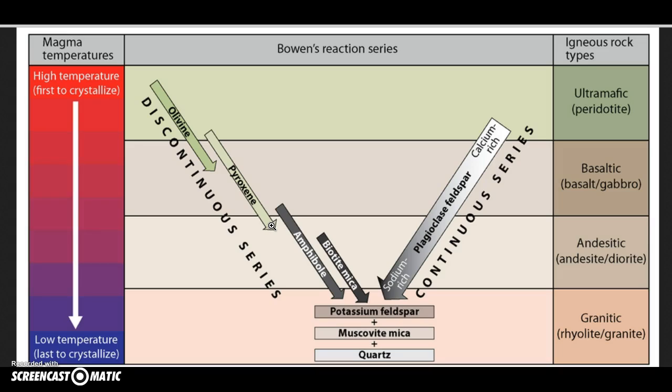So that's just a little bit of how we can go through Bowen's reaction series. Again, trying to understand that rocks that are ultramafic are forming at high temperatures and they're going to have distinct minerals that are present, whereas our felsic igneous rocks are forming at lower temperatures and pressures, and they're also going to have their more silica-rich, sodium-rich, potassium-rich minerals that are present. That's one way we can use Bowen's reaction series to understand what we're seeing in our igneous rocks.